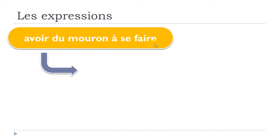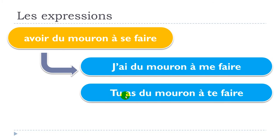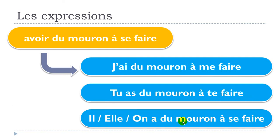So as I told you, we will have to change this 'se' part according to the subject. For the first person: 'j'ai du mouron à me faire'. For the second person singular: 'tu as du mouron à te faire'. For the third person singular: 'ils/elles ont du mouron à se faire'. Keep in mind: first person singular → me, second → te, third → se.